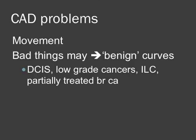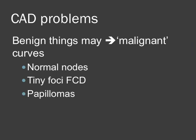Unfortunately, diagnosing cancer is not as simple as just seeing red spots on a breast MR scan — there are a number of problems with CAD. Patient movement, if not adequately corrected by the software, can create a lot of artifactual colour on the scan. Malignant processes may have relatively benign curves, giving false reassurance — DCIS (particularly low-grade), invasive lobular cancer, and partially treated breast cancer are examples. Conversely, benign processes can have washout or malignant-type curves, such as normal lymph nodes, tiny foci of fibrocystic disease, or papillomas.